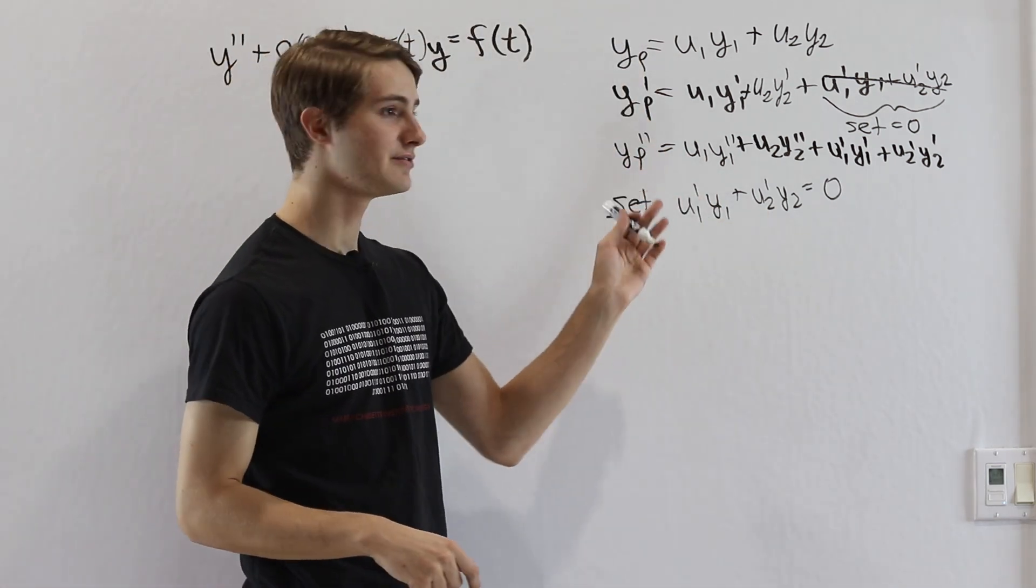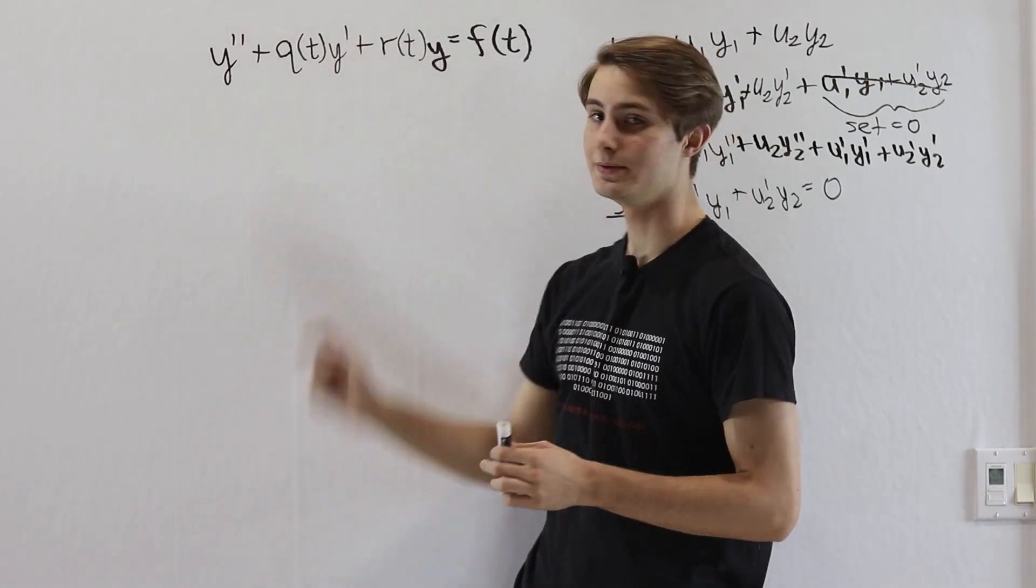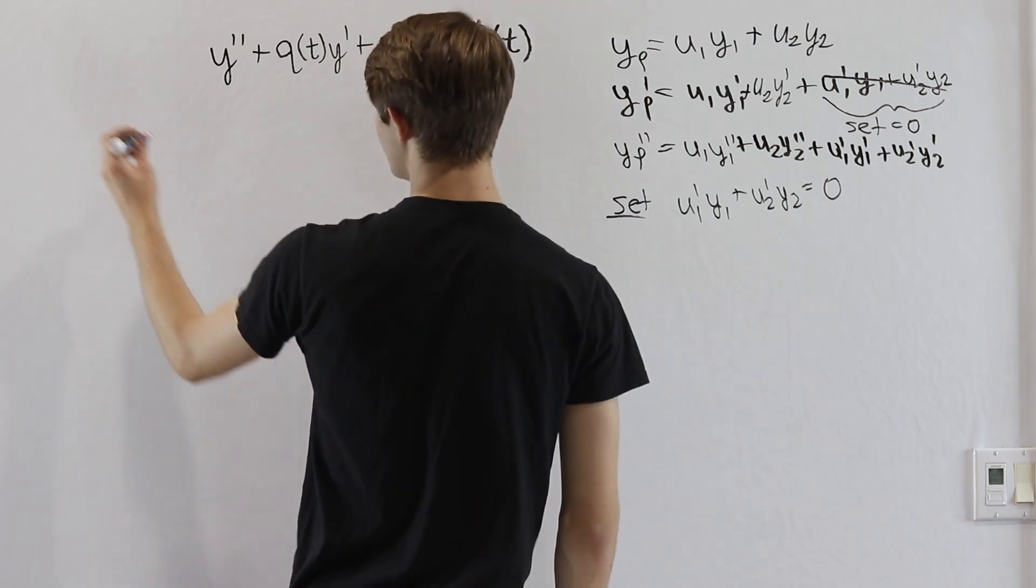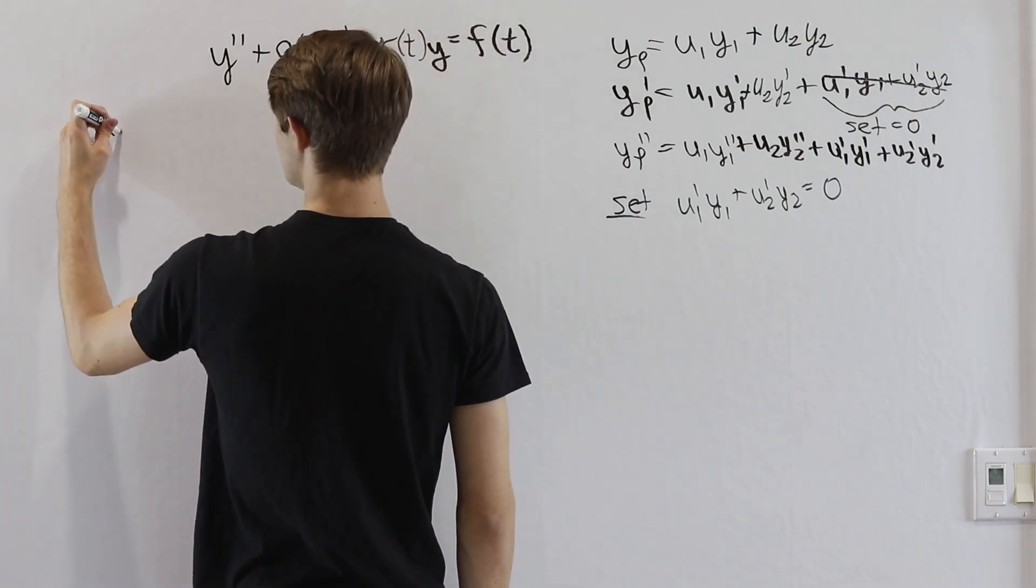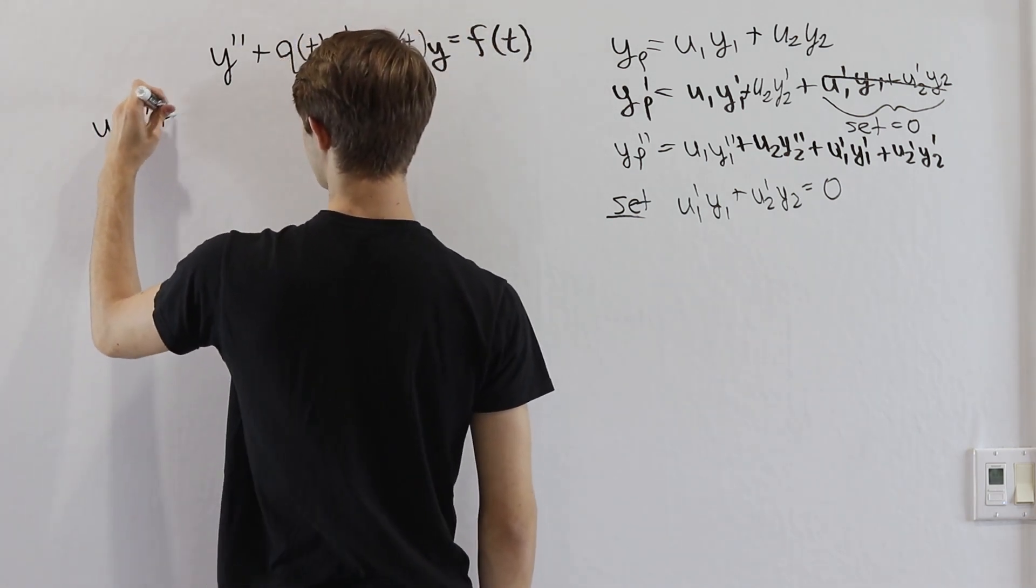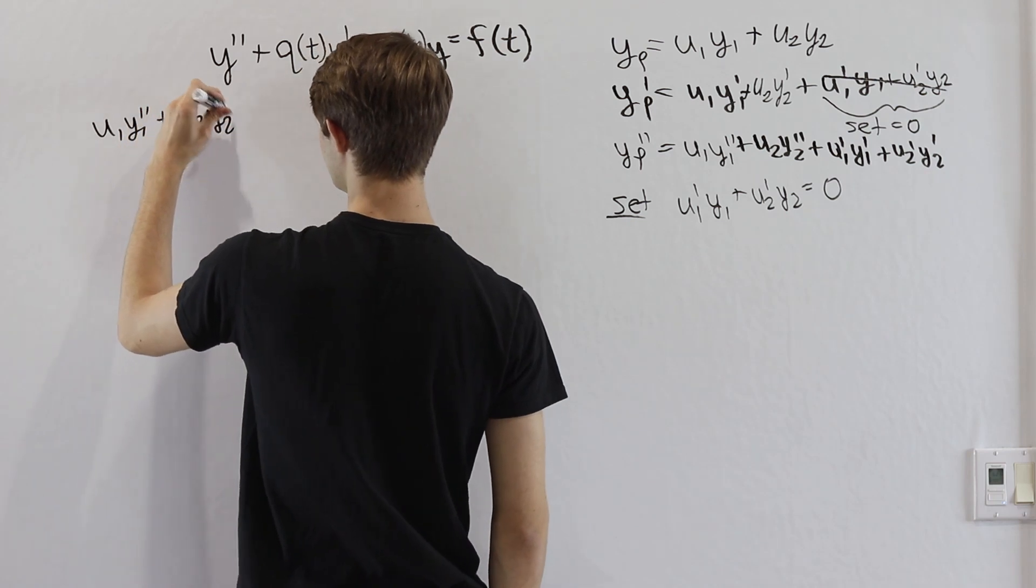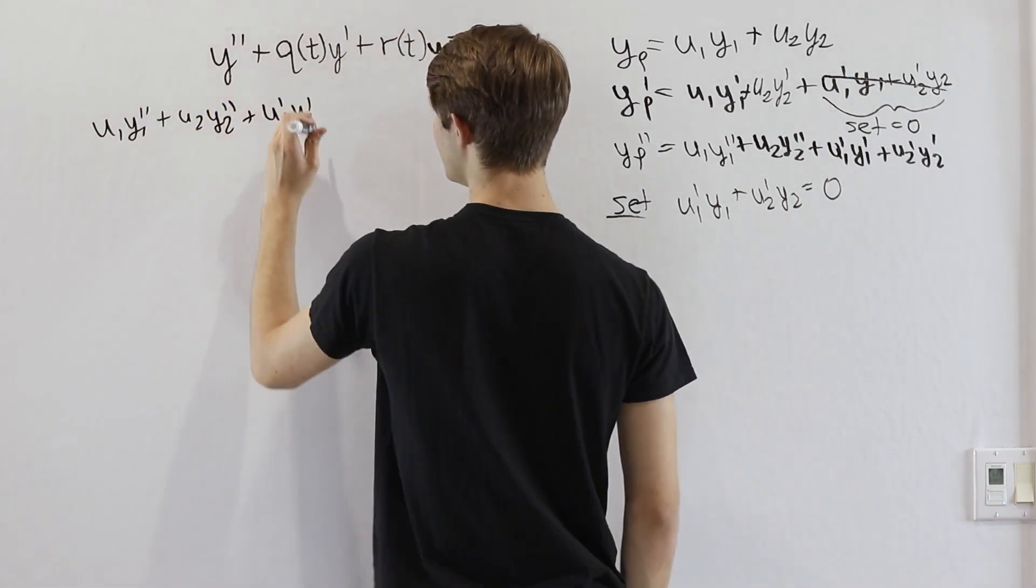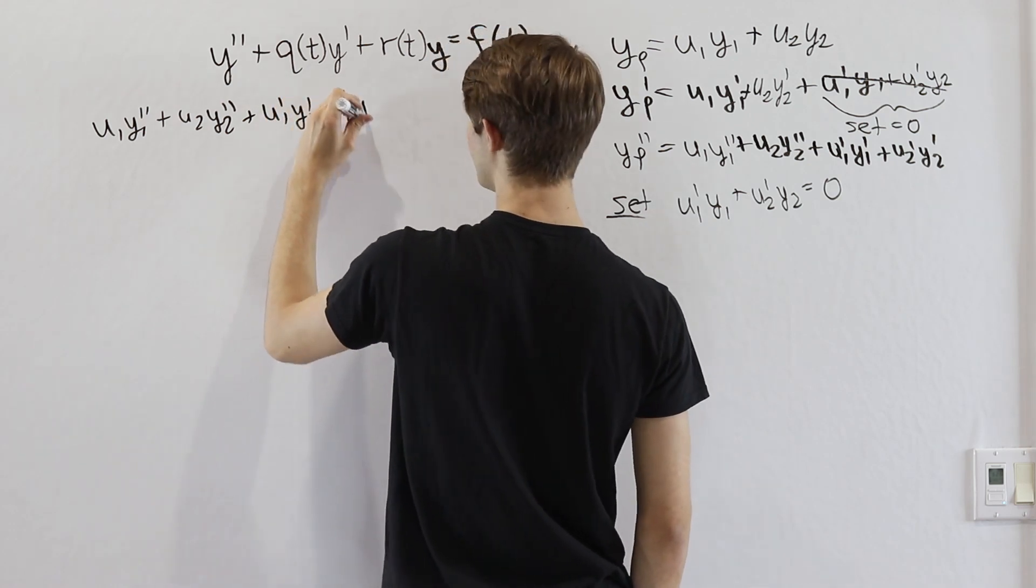Now we can plug all of this stuff into the equation that we have right here. Let's start out with our yp double prime. That's going to give us u1y1 double prime plus u2y2 double prime and then plus u1 prime y1 prime plus u2 prime y2 prime.